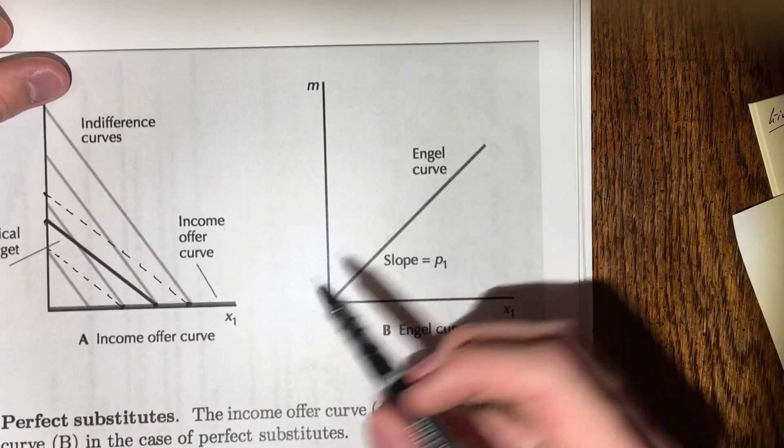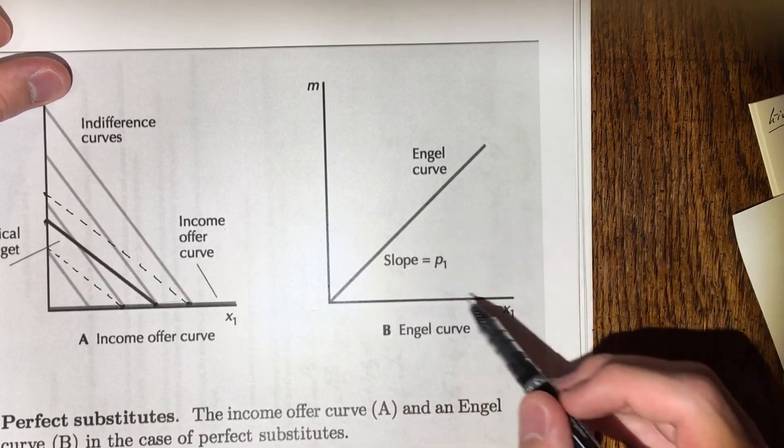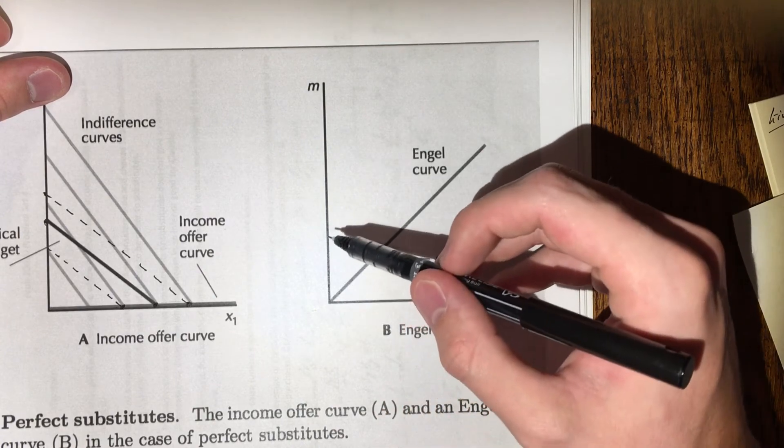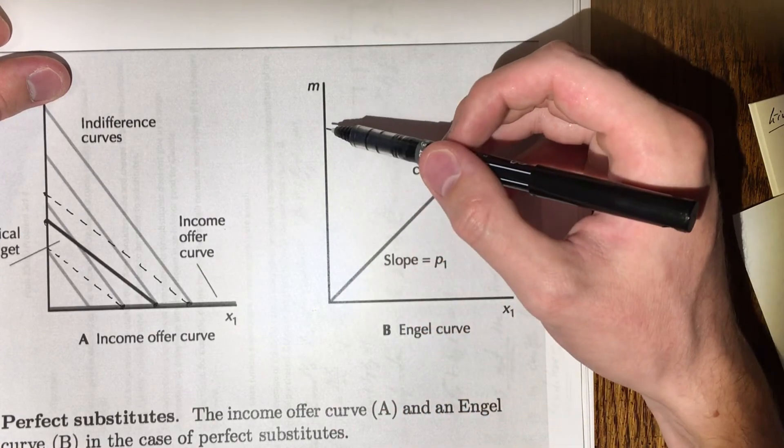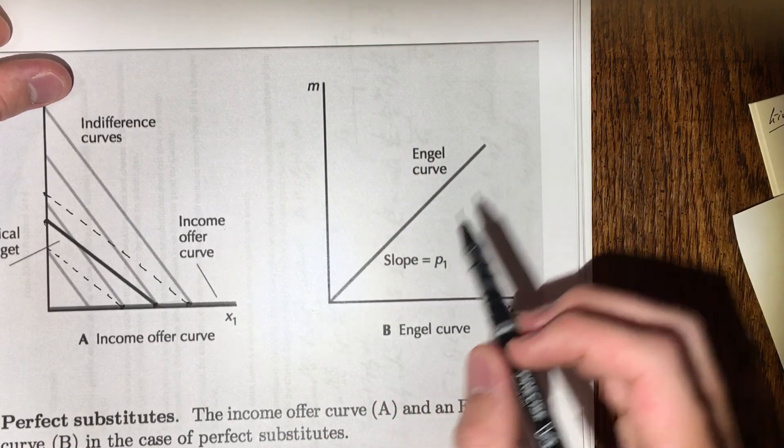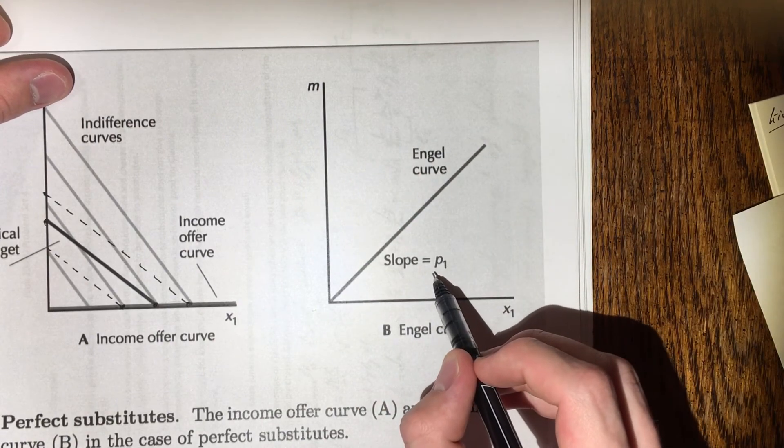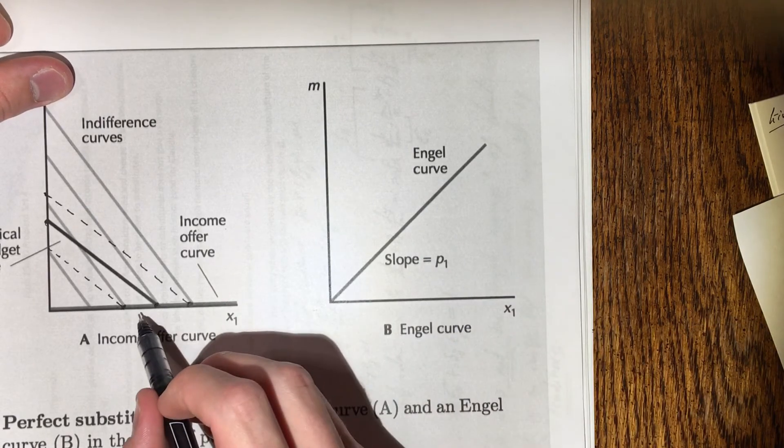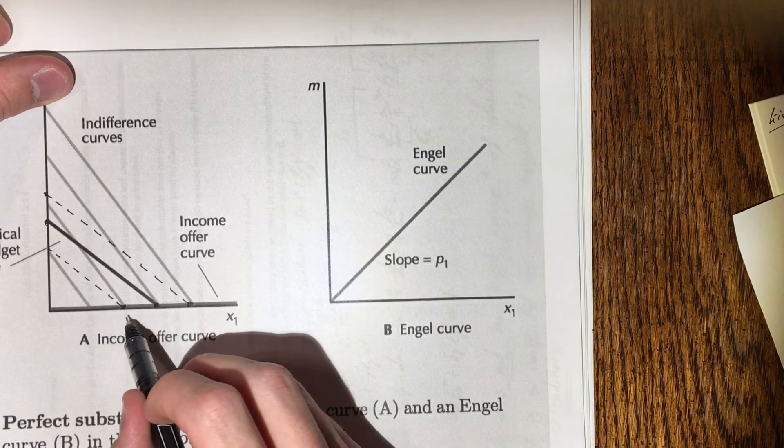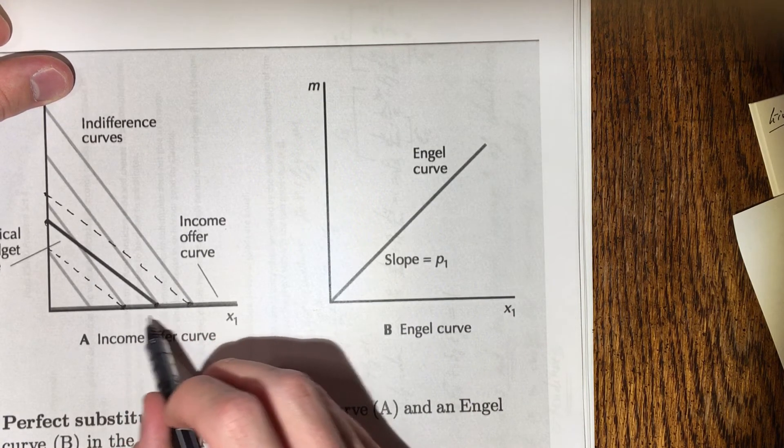So it's logical then to assume that the slope of the Engel curve, which graphs the consumption of x next to how much income we are spending, should have a positive slope, which it clearly does here. Why does it have a slope of p1?